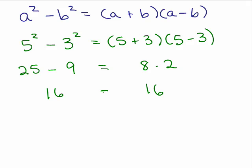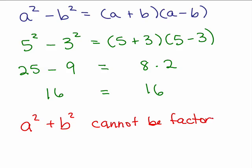So we see that it is true that you can do the difference of 2 squares, and we can verify by using some numbers that it actually is true. But keep in mind, a squared plus b squared cannot be factored. Hopefully you believe it.